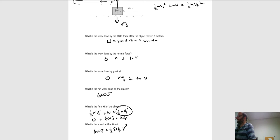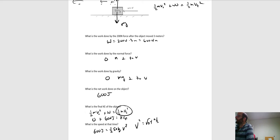To find the final speed: set the kinetic energy 600 joules equal to one half times the mass 50 kilograms times speed squared. That gives v squared = 1200 / 50 = 24, so the speed is the square root of 24, which is approximately 4.8 meters per second.